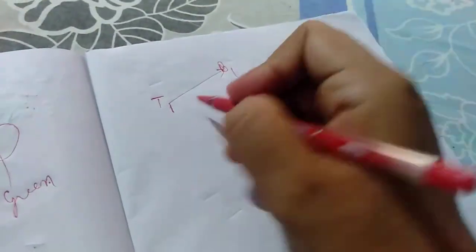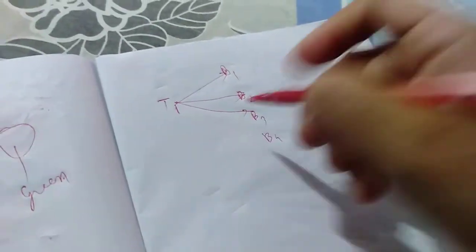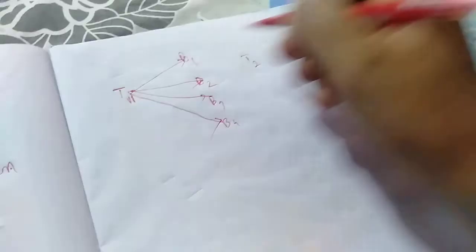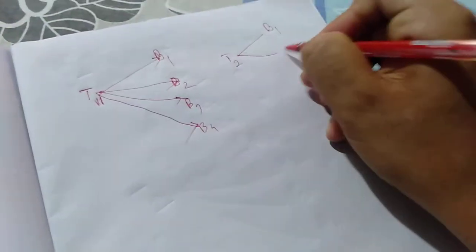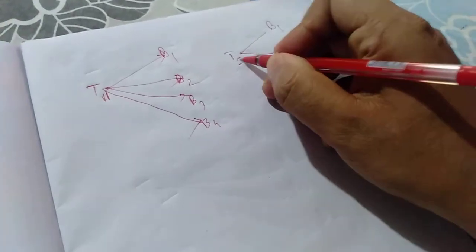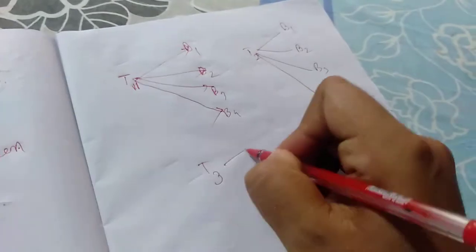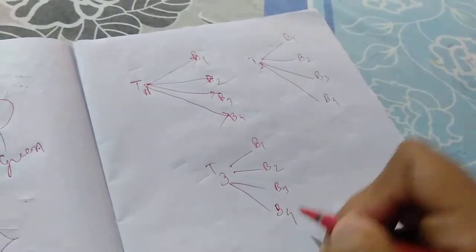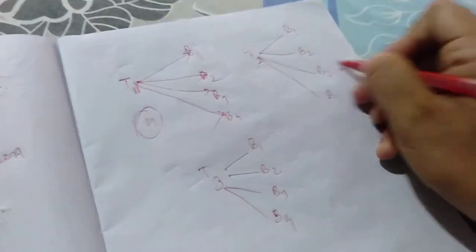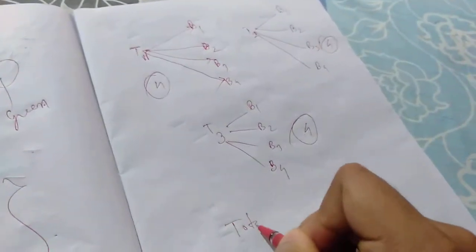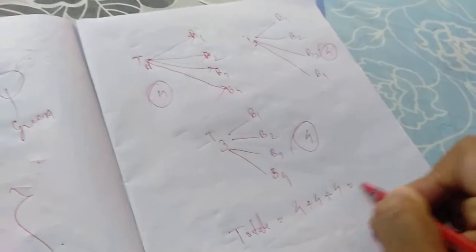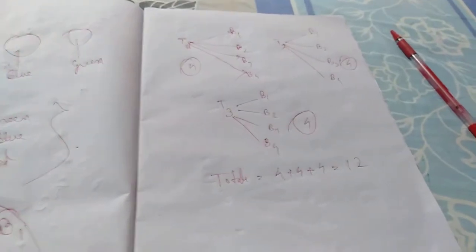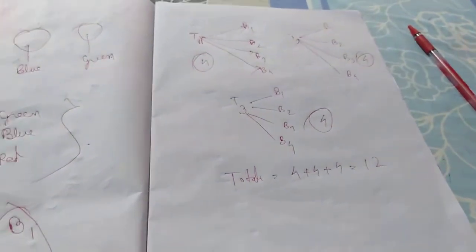First tie: belt 1, belt 2, belt 3, belt 4. Then second tie: belt 1, belt 2, belt 3, belt 4. Now third tie: belt 1, belt 2, belt 3, belt 4. This is how much? Four ways each. This is four ways, this is four ways, this is four ways. Total number of ways: four plus four plus four equals twelve. There are twelve number of ways in which you can wear a tie with these belts.